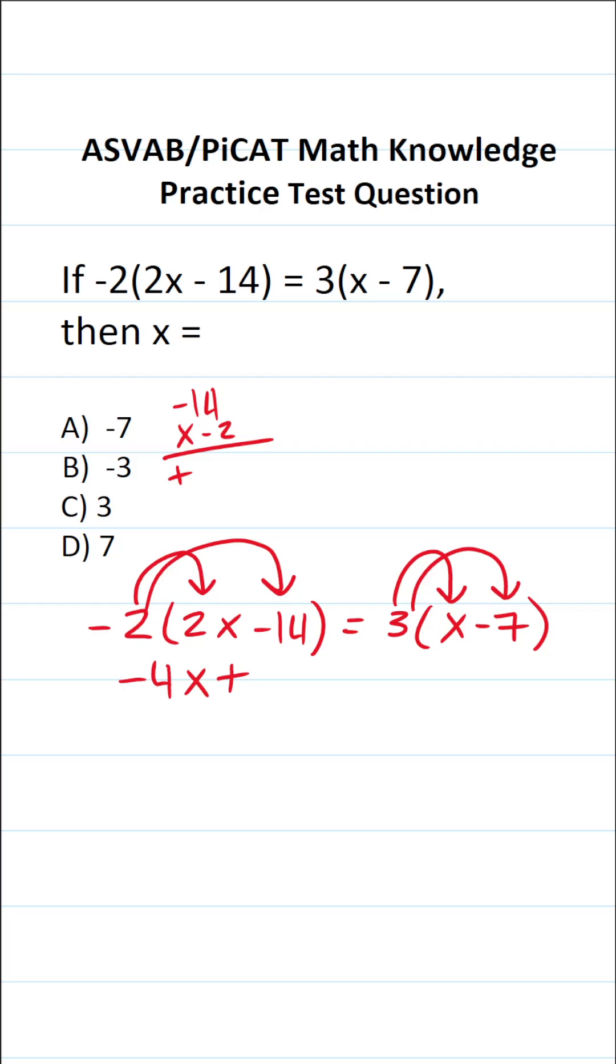4 times 2 is 8, 2 times 1 is 2. So this is going to be plus 28 equals 3 times x is 3x. 3 times negative 7, a positive times a negative is going to be negative 21.